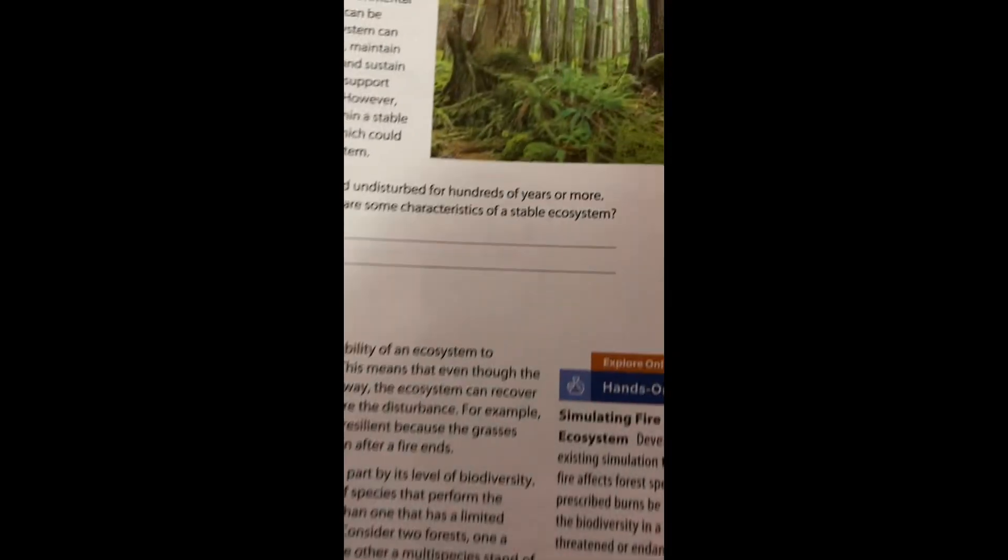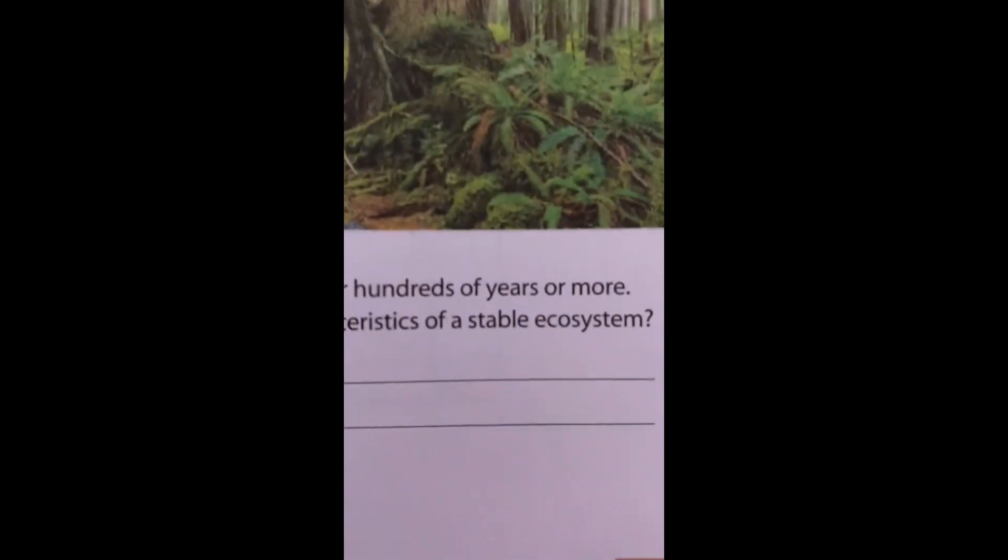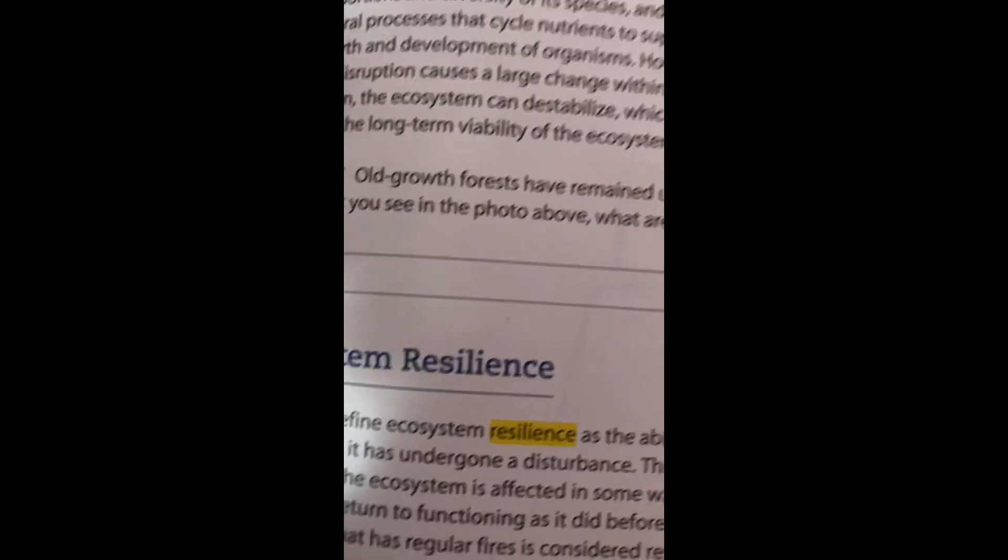Ecosystem Stability. Urbanization and other human activities can cause large changes to an ecosystem that can cause it to become unstable. Ecosystems exist in a constant state of change. Temperature and other environmental conditions fluctuate, and invasive species may be introduced to an ecosystem.